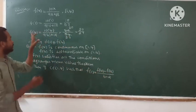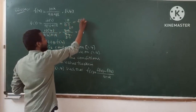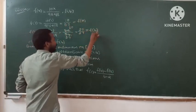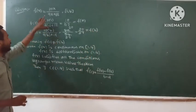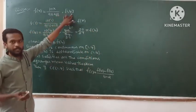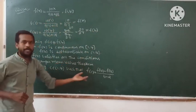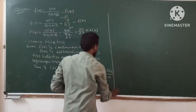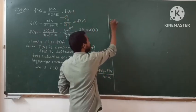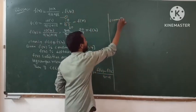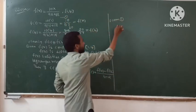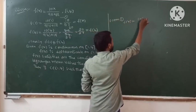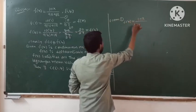Here, f(1) is f(a), f(4) is f(b), a = 1, and b = 4. We need to find f'(c). Let this be equation number 1. From equation 1, f(x) = 10x / (9x + 18) — actually written as 10x / (9(x + 2)).